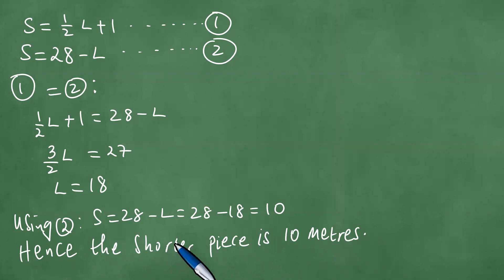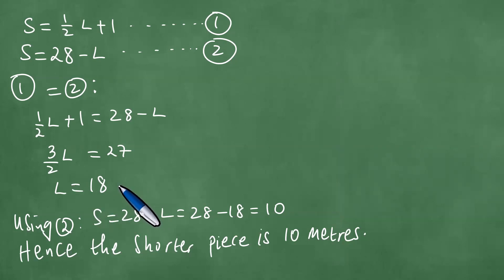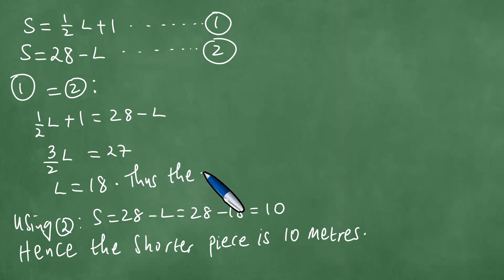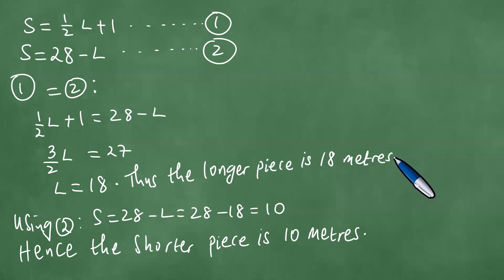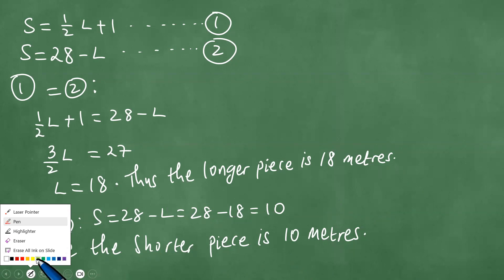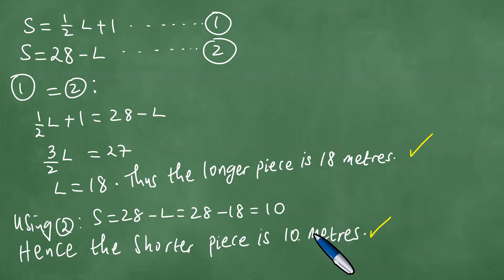The shorter piece is 10 meters. That is what they wanted us to determine. The longer piece is 18 meters. We have solved this question in detail and have the two results: 10 meters and 18 meters.